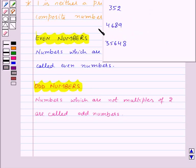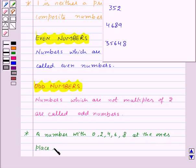Now suppose you are given very large numbers like this and you need to find even and odd numbers. Then you can use one result that is: a number with 0, 2, 4, 6, 8 at the ones place is an even number, otherwise it is an odd number.